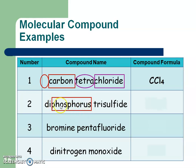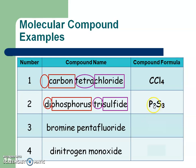For example two, diphosphorus trisulfide: the first element is phosphorus, symbol P. The prefix di means two — like dice, you usually have two of them — giving P2. The second part, sulfide, comes from sulfur, symbol S. The prefix tri, like a tricycle, means three, giving S3. So the formula is P2S3. Notice there are no charges or crisscrossing — just element symbols and subscripts from prefixes.